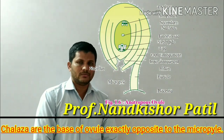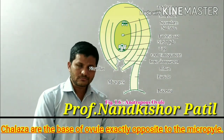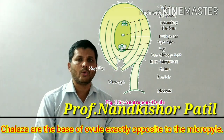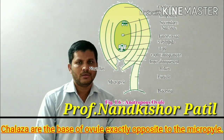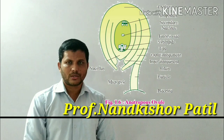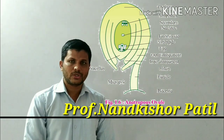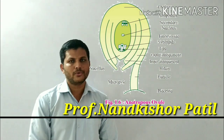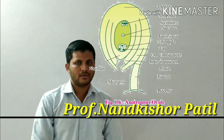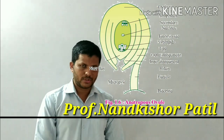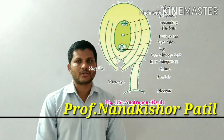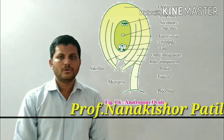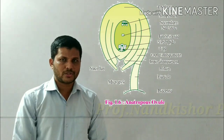And the embryo sac is an oval multicellular structure which is embedded in the nucellus. This is the structure of the anatropous ovule. So thanks so much.